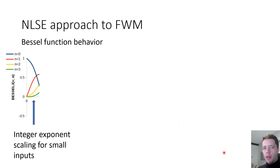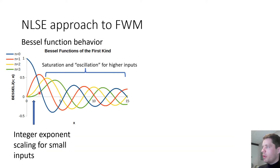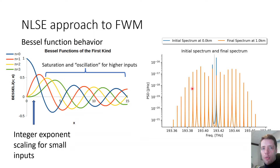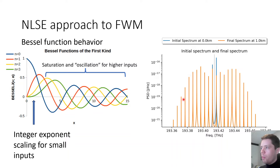For large arguments — high input power or very long fiber — the Bessel functions saturate and begin to oscillate. Simulations confirm that lower-order sidebands saturate and oscillate at high power, while higher-order sidebands still exhibit the power-law scaling behavior expected in the small-argument regime.